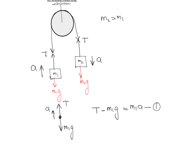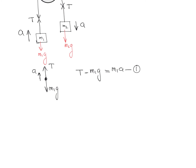Similarly, we draw the free body diagram for m2. The forces acting on m2 are m2g in the downward direction and tension T in the upward direction, and m2 is moving with acceleration a in the downward direction. Taking downward as positive and upward as negative, we write: m2g minus T equals m2 times a. This is equation two.